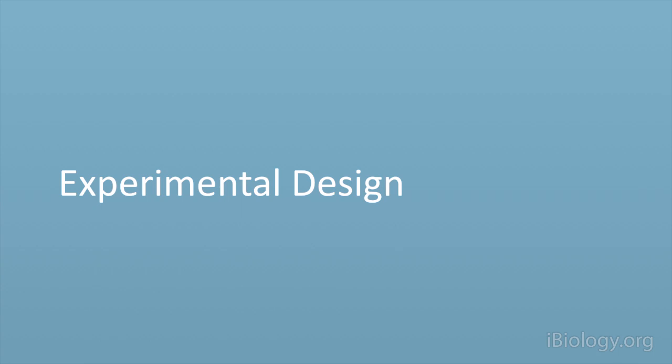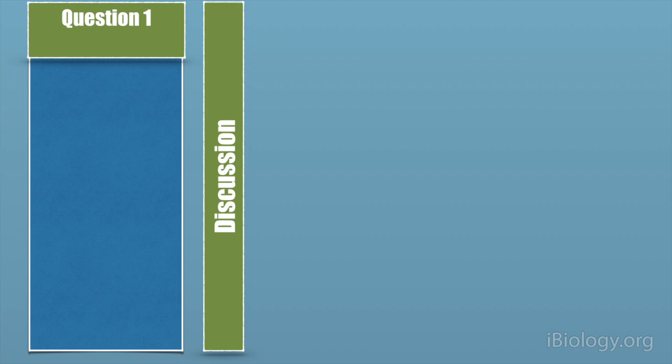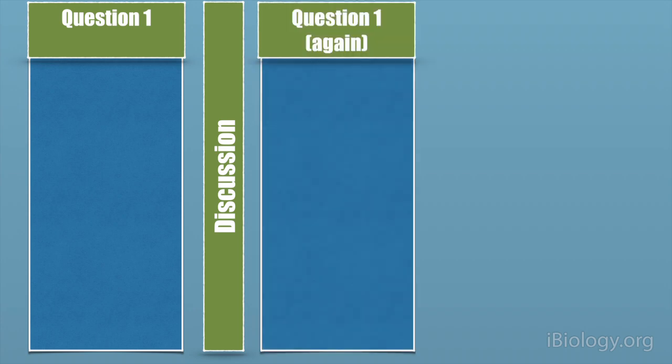The experimental design was to ask students the first question of a pair and then let them vote and not show them the result. Then let them discuss it and then ask the question again and let them vote again and don't show them the result.